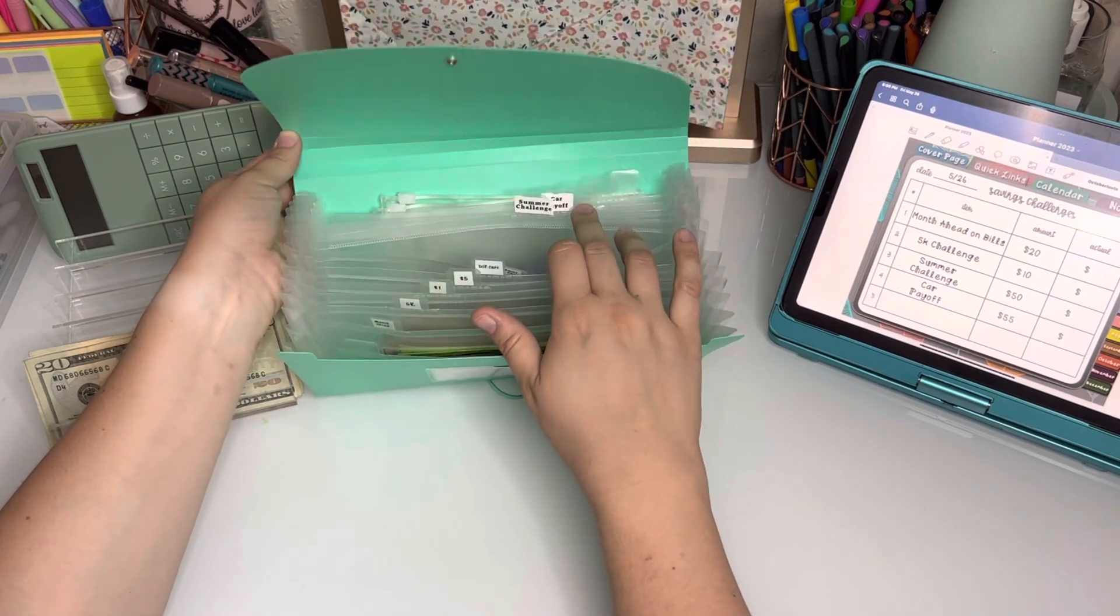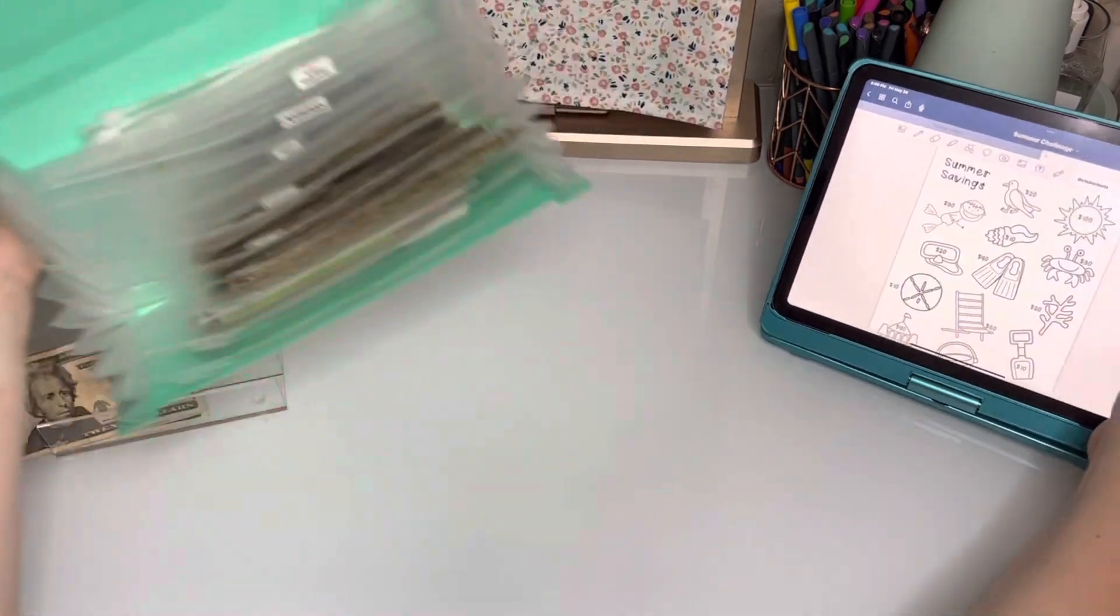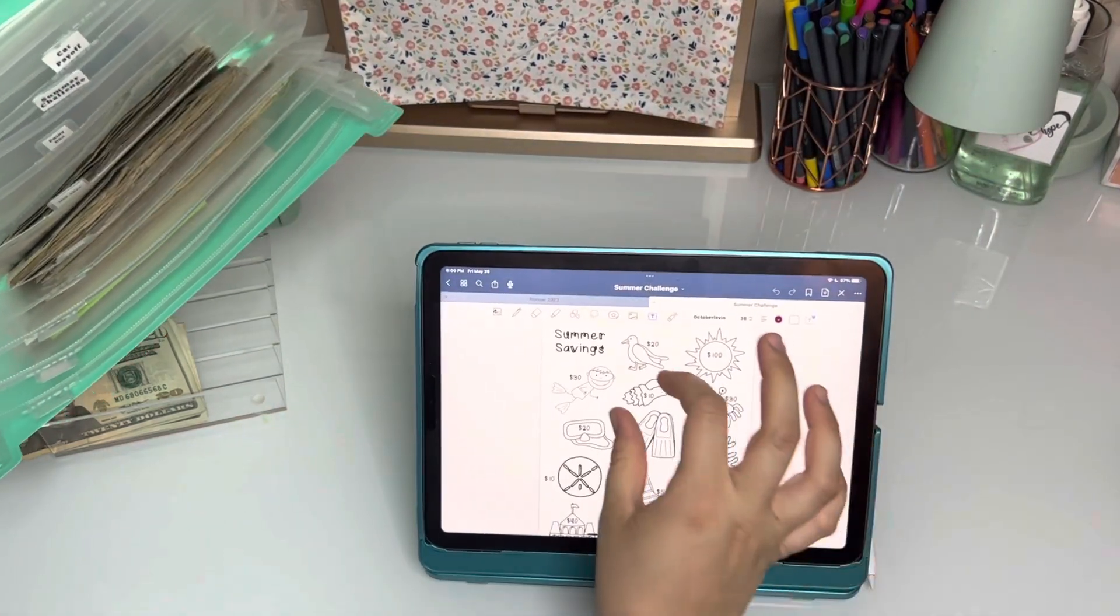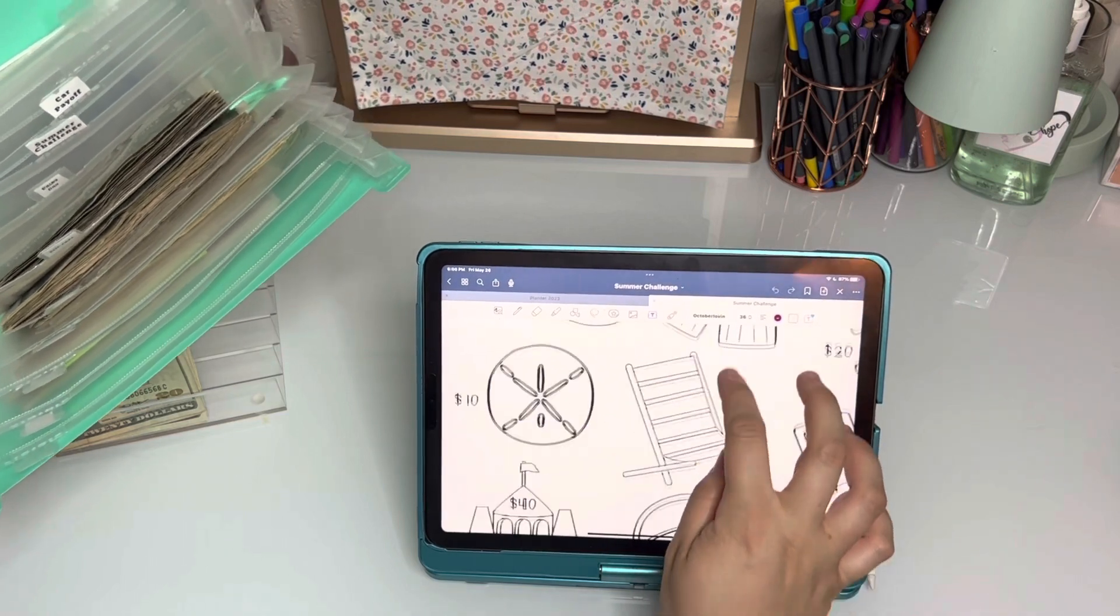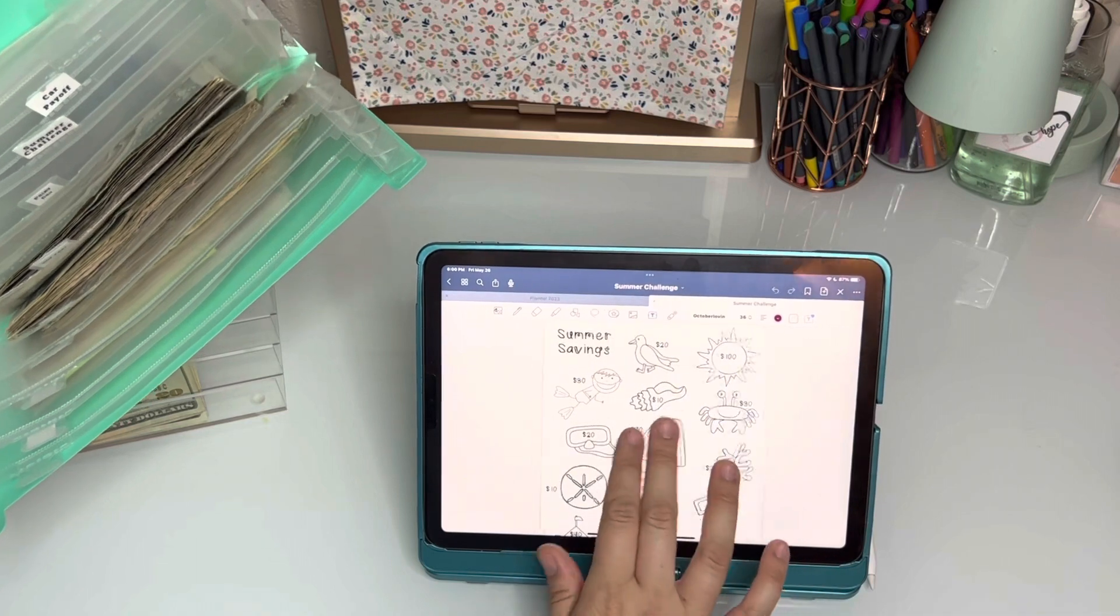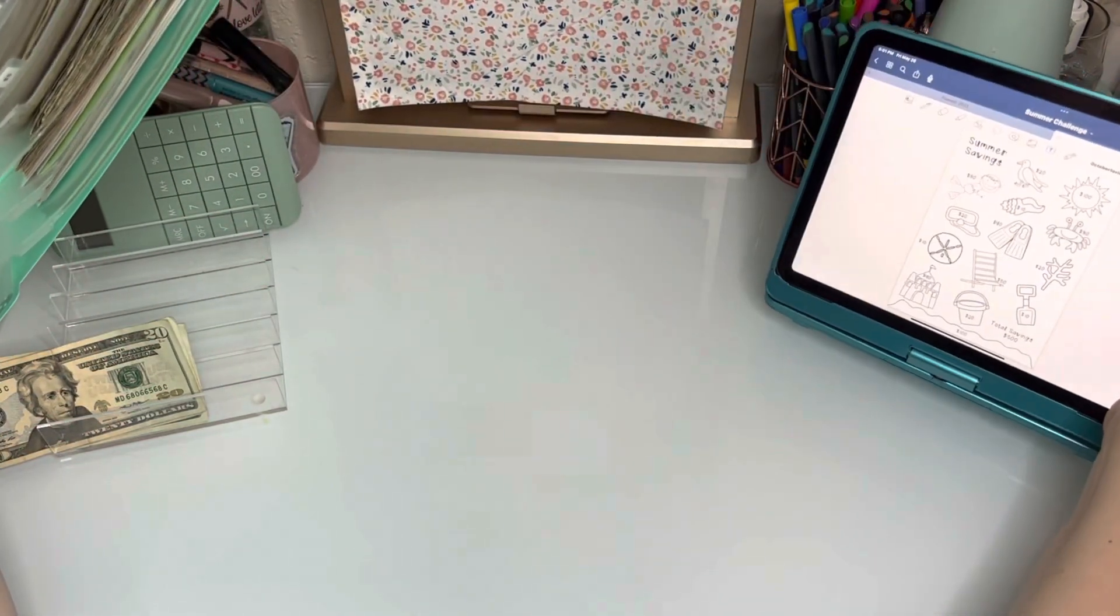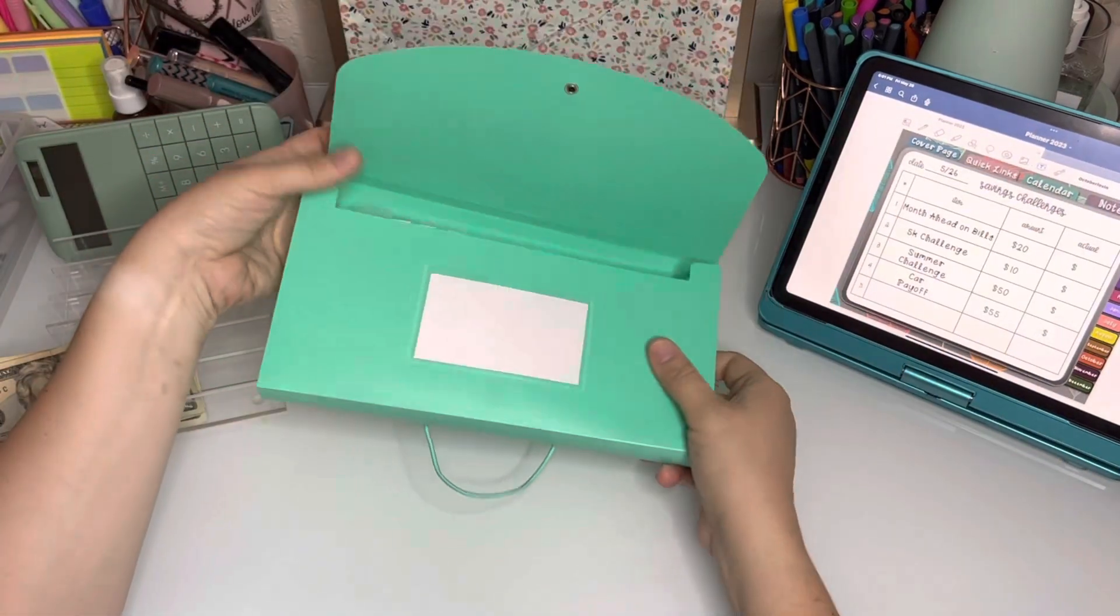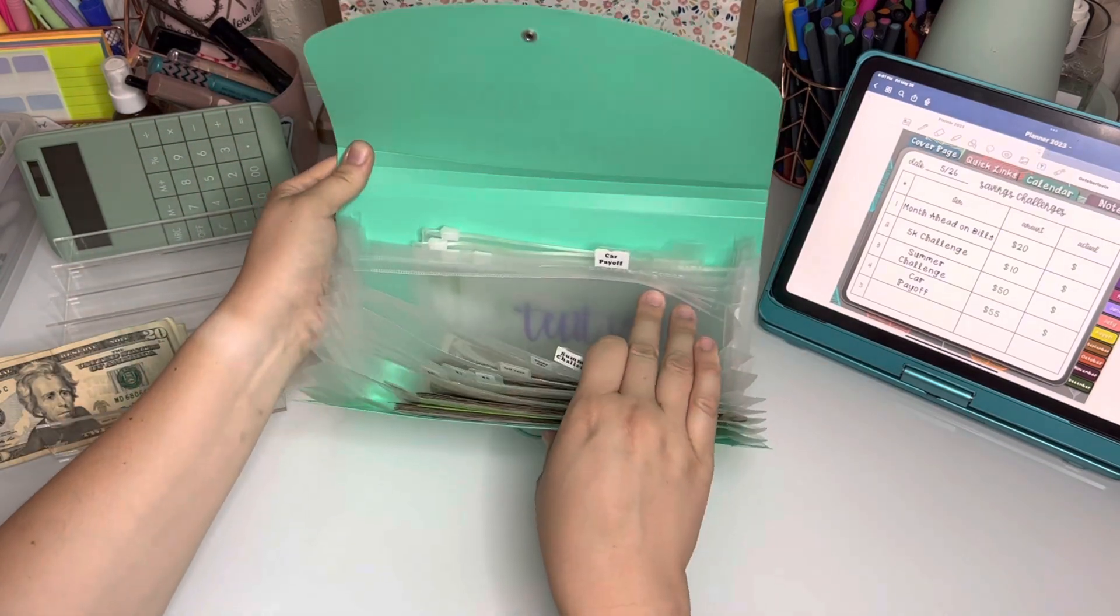But I have added my summer challenge label, which is this little PDF over here. I'll kind of move this so you can see it. I don't feel like you guys could see it really well last time, but there's the zoomed version. You can kind of see that there's all the little summer things on there. I'm such a teacher, I love all that clip art. So we're gonna use that and I'm gonna color them in today, and then I have added the car payoff challenge.